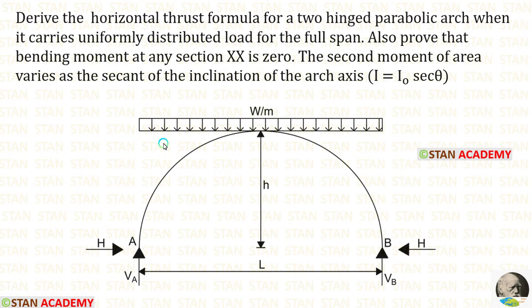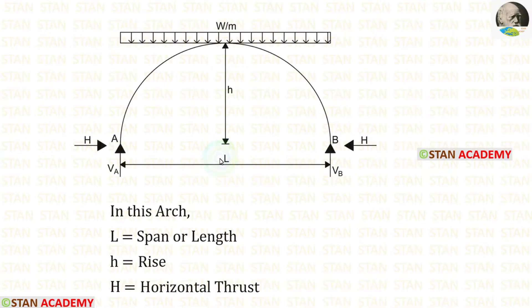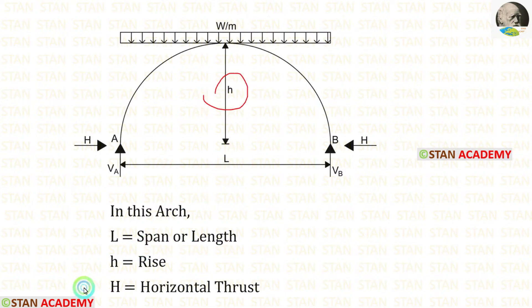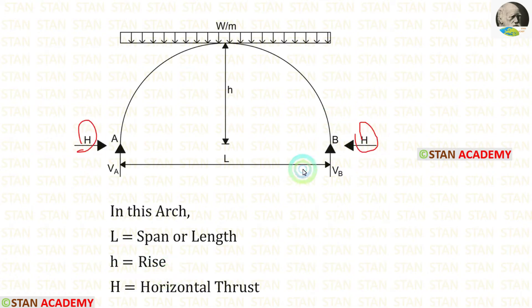In this problem, we have to find two things: the horizontal thrust, and we have to prove the bending moment at any section XX is equal to zero. In this arch, L is the span or length, H is the rise of the arch, H is the horizontal thrust of the arch, and VA and VB are the vertical reactions.